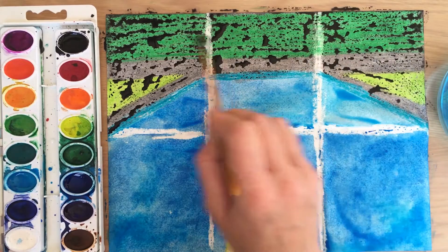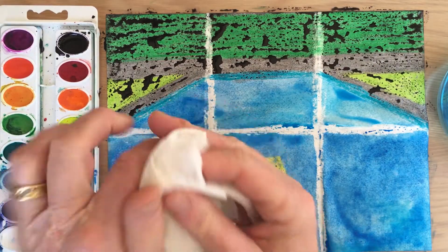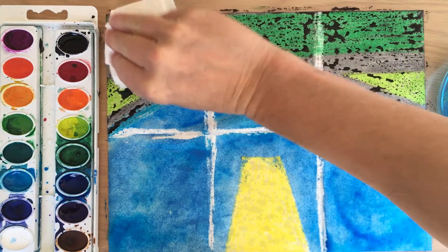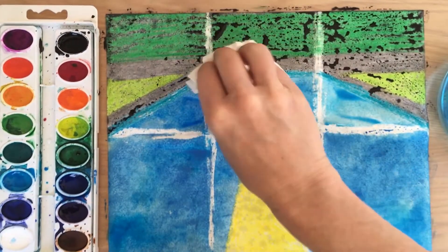Now, once you're done with the painting, take your paper towel and just dab off the black paint.